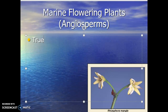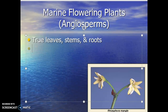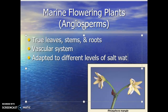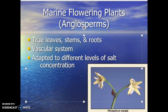With plants, they have true leaves, stems, and roots. The algae had comparable structures — we talked about blades, stipes, and holdfasts. In plants, we say leaves, stems, roots. The big difference here is that marine plants have a vascular system — they can conduct nutrients and water throughout the body of the plant. Marine plants are also adapted to different levels of salt water or salt concentration: some grow directly in salt water, others on the edge.